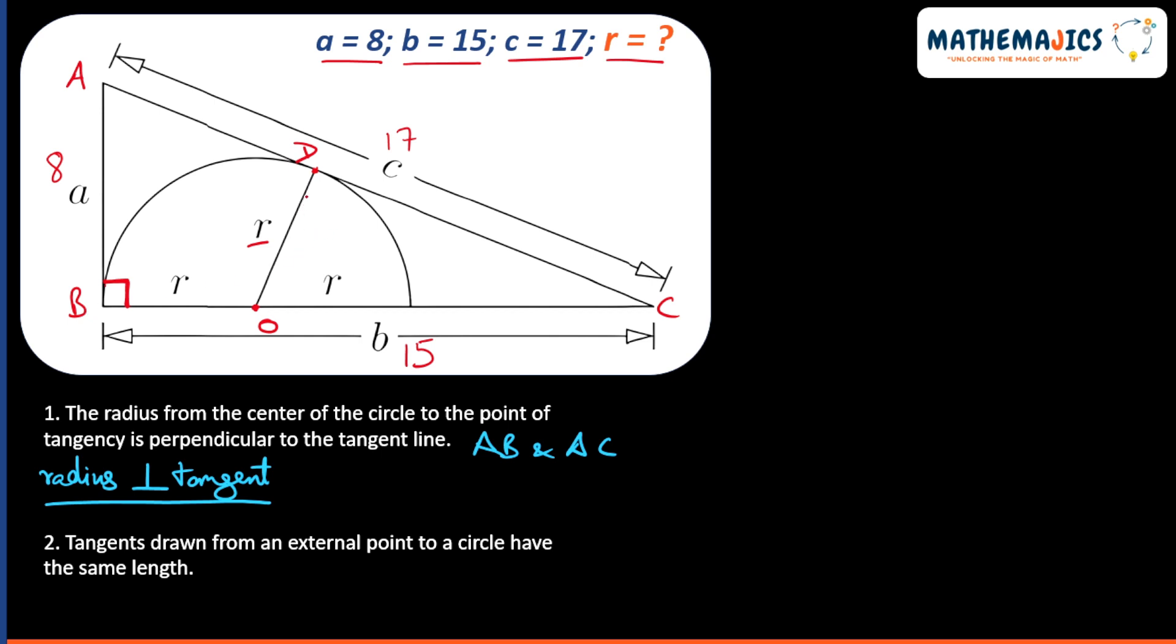Similarly, angle ODC will be 90 degrees because the radius of the circle is perpendicular to the tangent AD and DC.